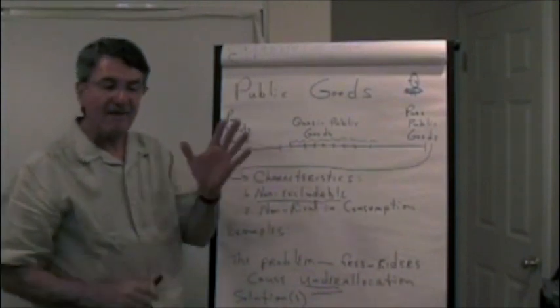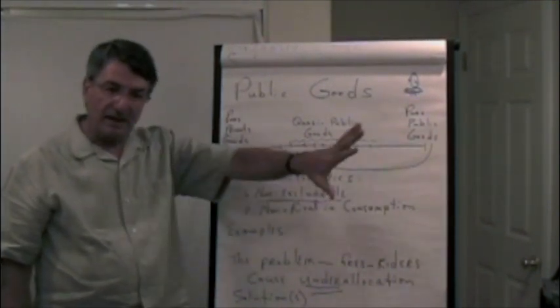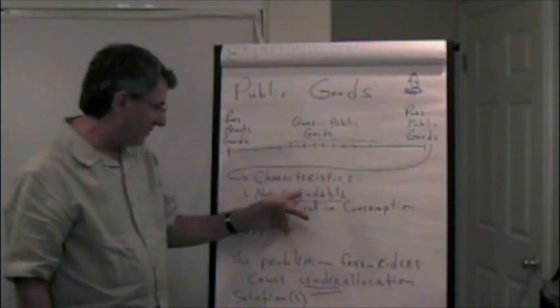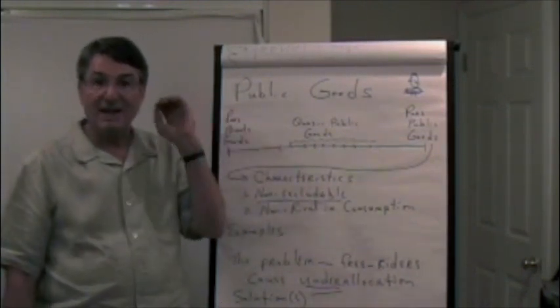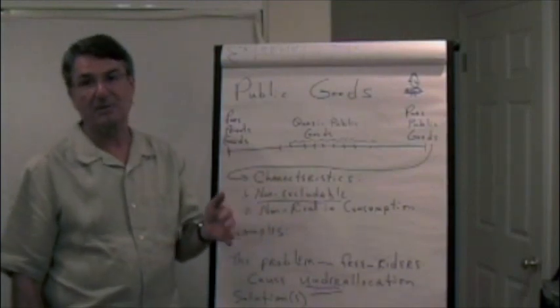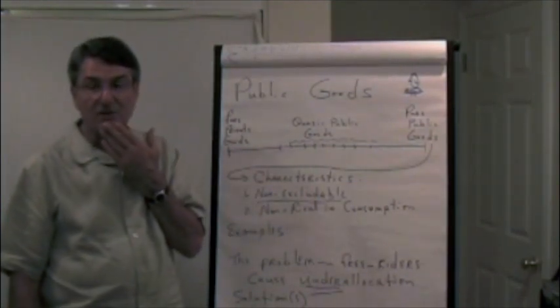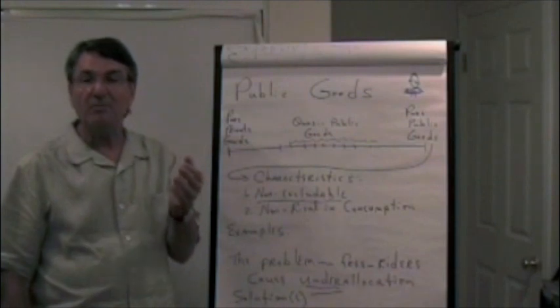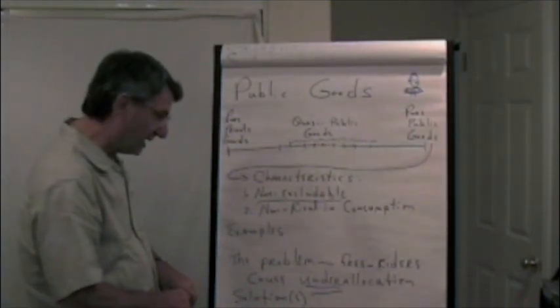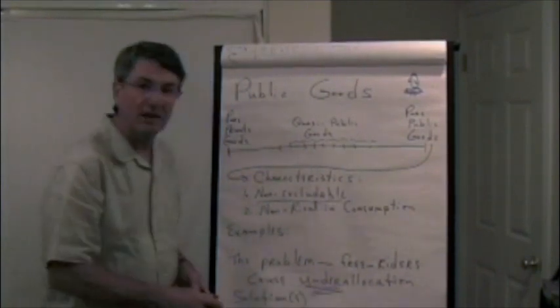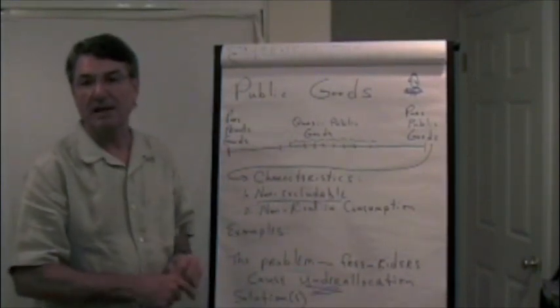If half the people get together and build the lighthouse, because the lighthouse is not excludable others know that they can be free riders and they have an incentive not to contribute. And because they don't contribute there will be inadequate money. If it's all left to voluntary processes there will be an under allocation because too little money will be collected to build a proper lighthouse.